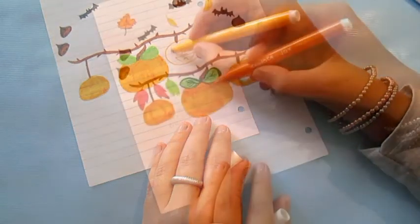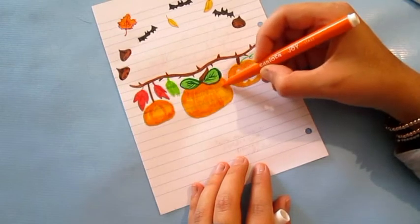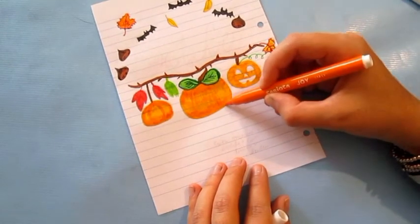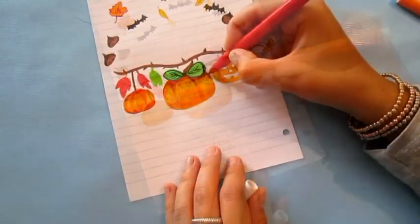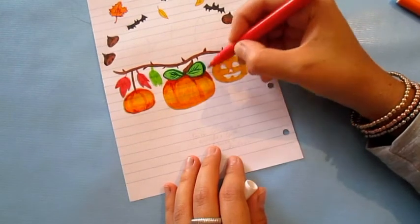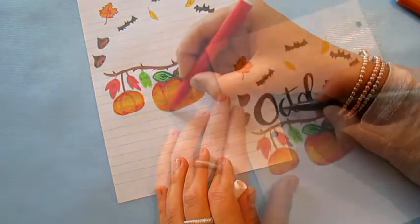For my monthly log, I've drawn some pumpkins, chestnuts and some leaves. I've glued together a brown piece of paper with the October calendar. I've just written in a white paper the calendar.